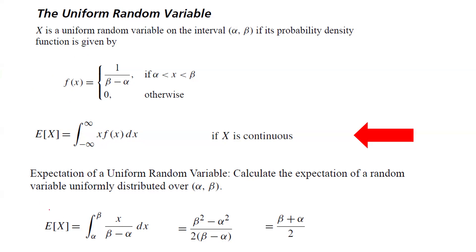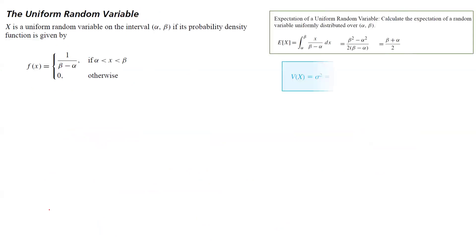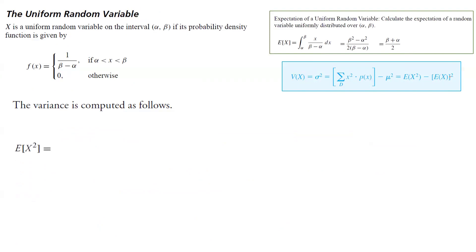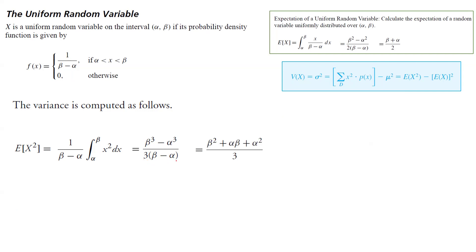Now, to calculate the variance — remember the variance of x is the expected value of x squared minus the expected value of x, squared. We need to calculate the expected value of x squared; we already know the expected value of x is beta plus alpha divided by 2. The expected value of x squared is 1 over beta minus alpha times the definite integral of x squared dx, which is one-third x cubed. This gives beta cubed minus alpha cubed divided by 3 times beta minus alpha, which simplifies to beta squared plus alpha beta plus alpha squared divided by 3, after cancelling the common factor beta minus alpha.